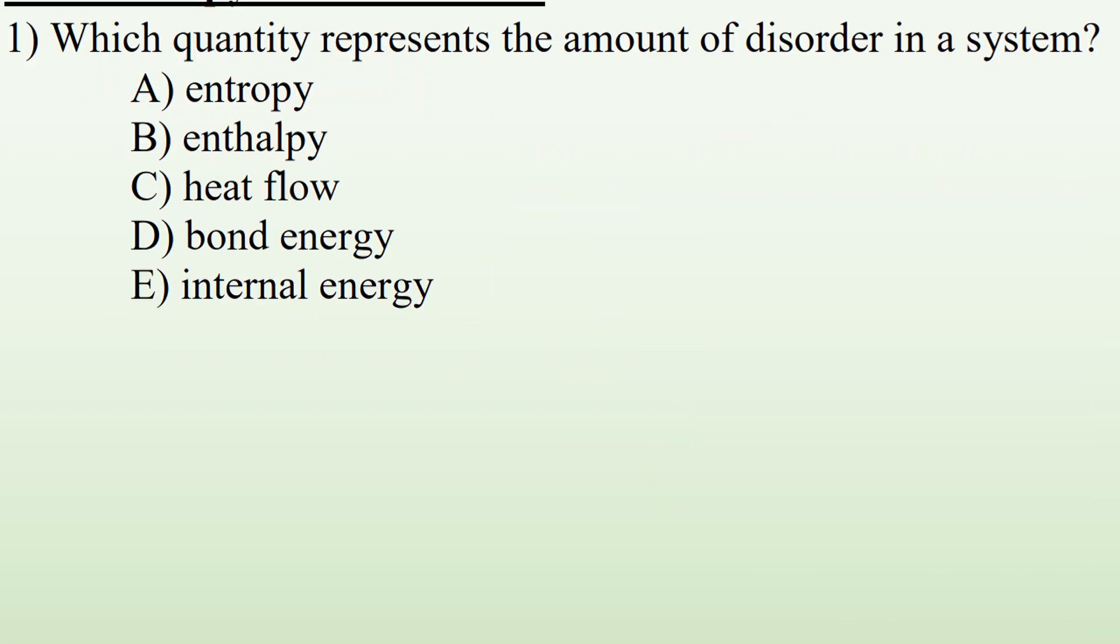All right, so number one, which quantity represents the amount of disorder in a system? So it's going to be A. Entropy is a measure of disorder. It's not enthalpy, it's not heat flow, bond energy, or internal energy. Entropy is the amount of disorder in a system.